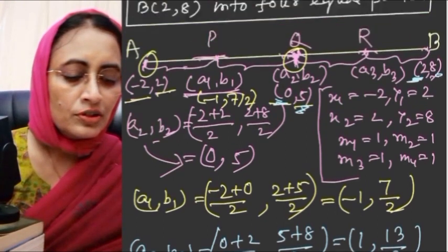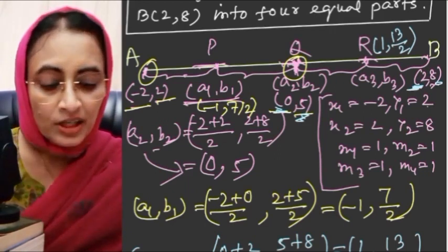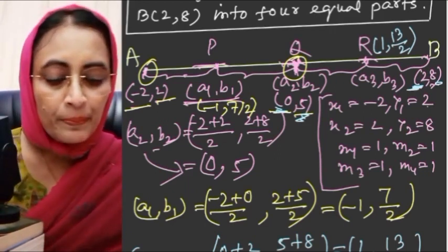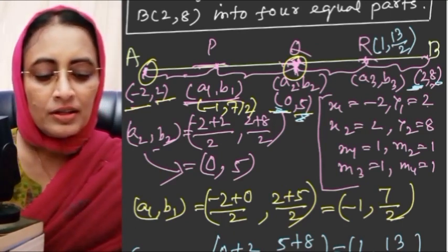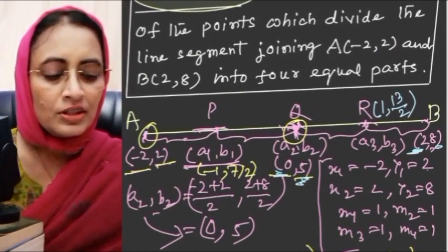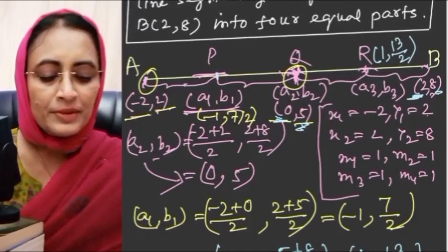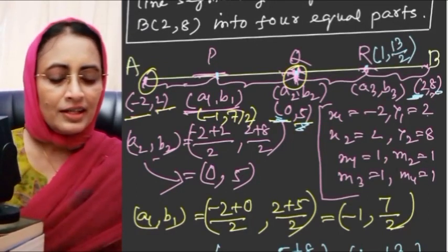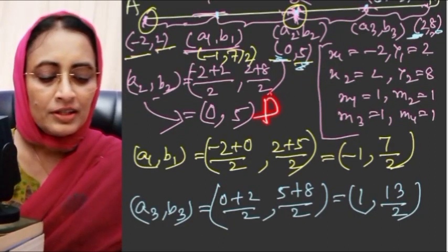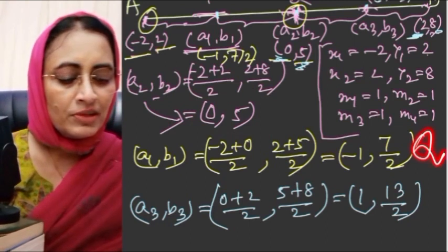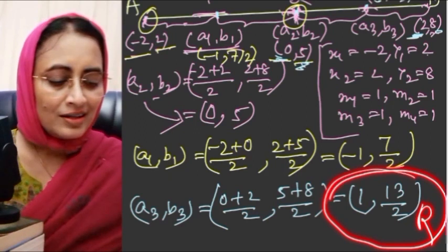So ultimately we have found the coordinates of all the points dividing the line segment into four equal parts. The coordinates are: P = (-1, 7/2), Q = (0, 5), and R = (1, 13/2).